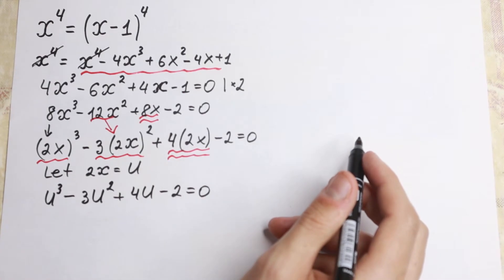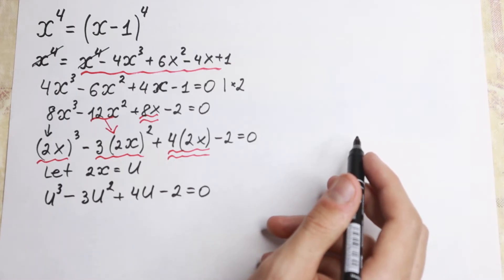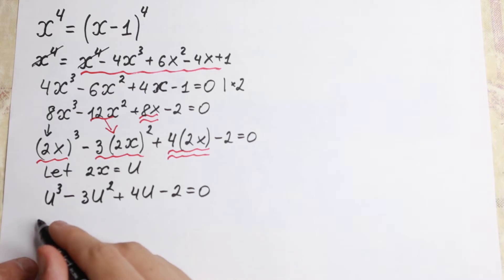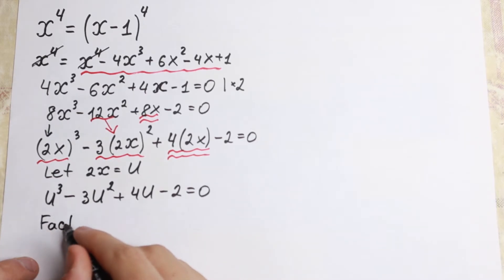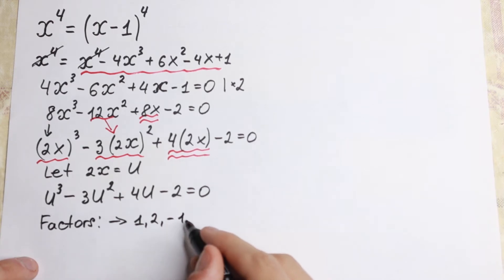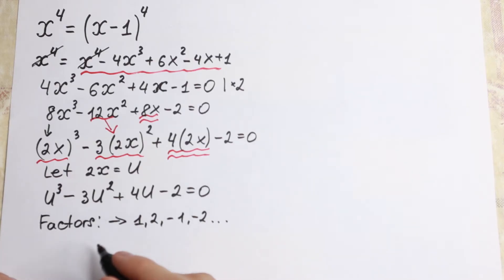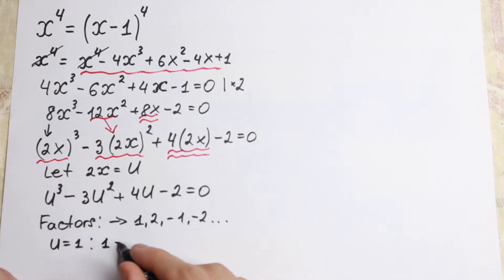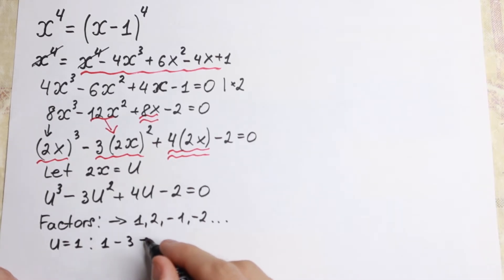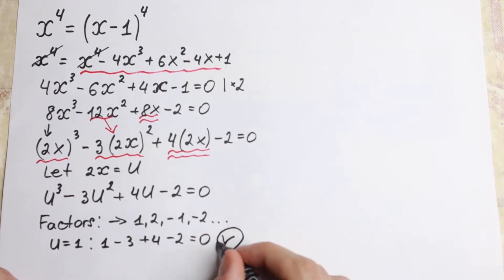We now have a classic cubic equation with no leading coefficient other than 1. To solve it, let's find factors of minus 2: these are 1, 2, minus 1, minus 2. Testing u equal to 1: we get 1 minus 3 plus 4 minus 2 equal to 0. So u minus 1 is a factor.